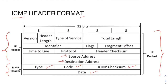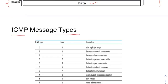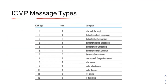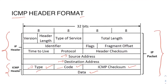Different ICMP message types depend on the combination of ICMP type and code. If the ICMP type is 0 and code is 0, that means there is an echo reply — a reply to ping. If the ICMP type is 3 and code is 0, it means 'destination network unreachable', which is the example we just saw.